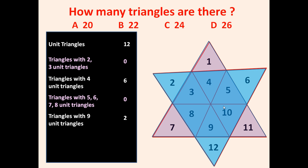Triangles with nine unit triangles are two. Can you make another triangle using ten, eleven, or twelve triangles? No. So total number of triangles is 12 plus 6 plus 2 equals 20. Friends, the answer is 20.